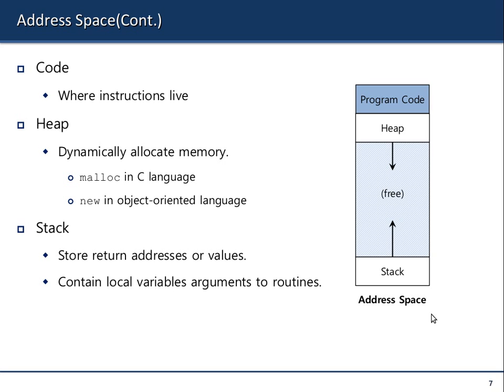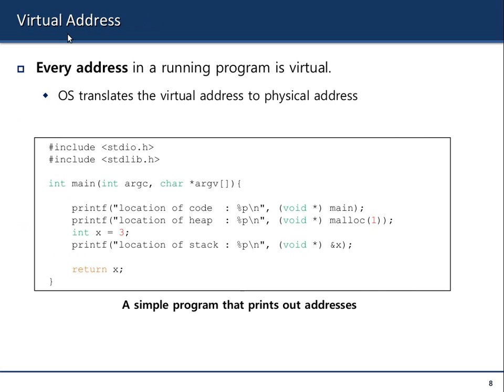The key takeaway here is: whenever you have a running program — a process — you should always visualize this structure. Whenever you are running Firefox or a terminal, imagine that this is what its structure looks like in memory. This address space is actually called the virtual address space, because once the operating system is loaded, all addresses printed in your program are virtual addresses.